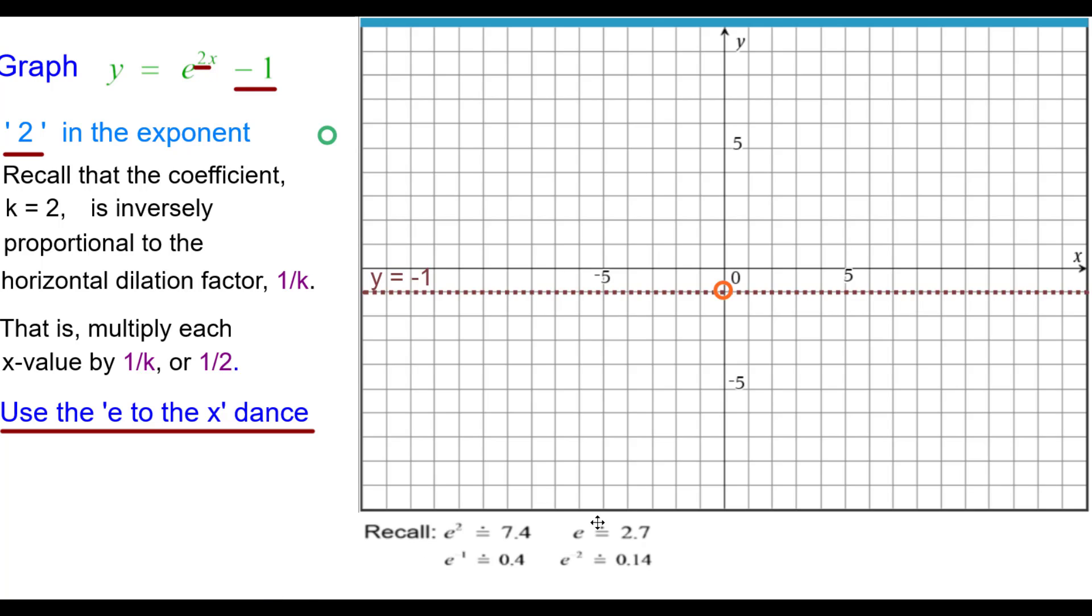So we're ready to do the e to the x dance. And here are our powers of e that we need to know. So normally we go right 0 up 1. In this case, we'll stay right 0 up 1 because multiplying that 0 by 1 half has not affected at all. We call it that e to the 0 is 1.